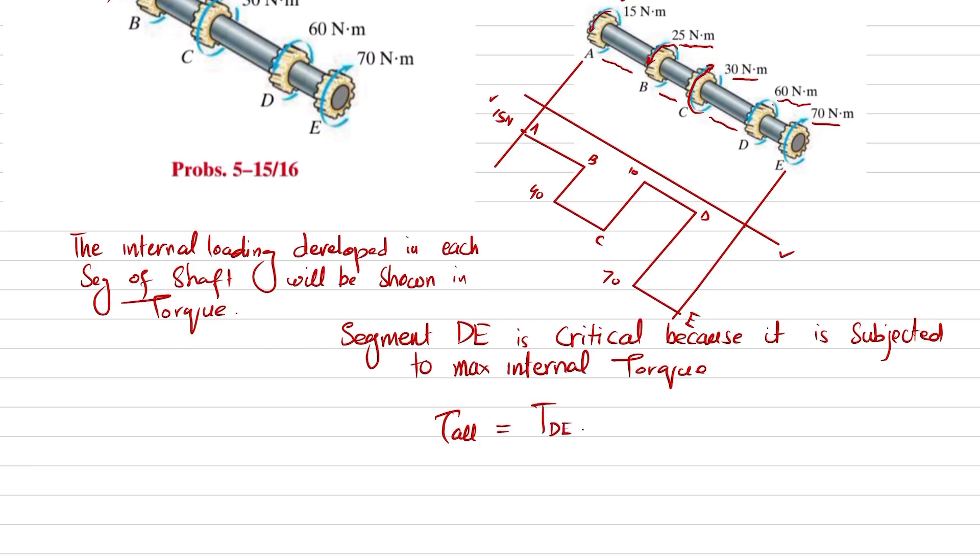We know that allowable shear stress equals maximum torque, which is in DE, multiplied by c divided by J. For a circular shaft, we have J equals π/32 times d to the power 4.